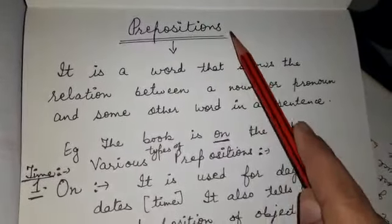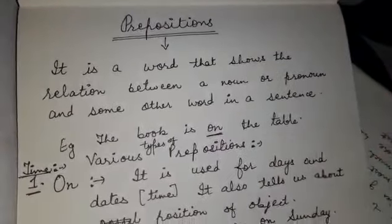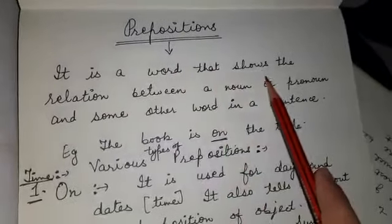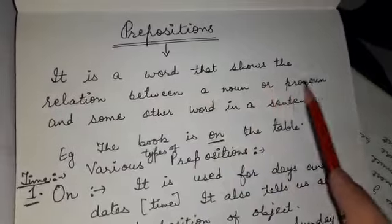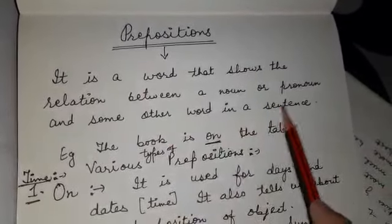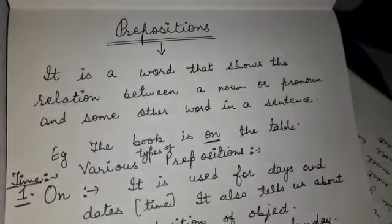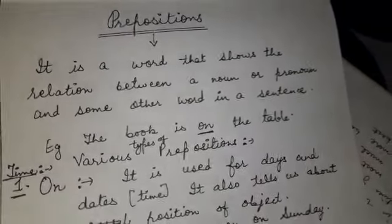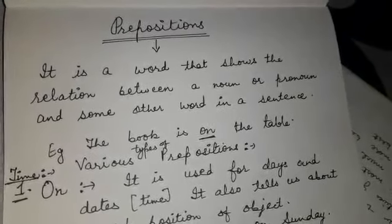Prepositions, chapter number 9 of your book. Prepositions kya hoti hai? It is a word that shows the relation between a noun or a pronoun and some other word in a sentence. Ek noun ka dousre noun se yaa ek noun ka dousre pronoun se dousre word se kya relation hai, uske baare mein hume batata hai.